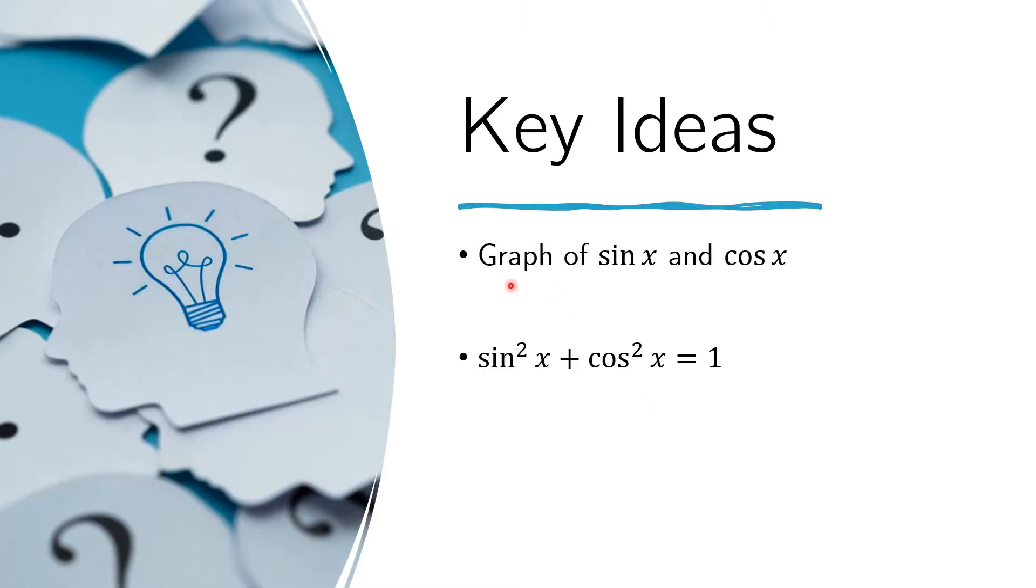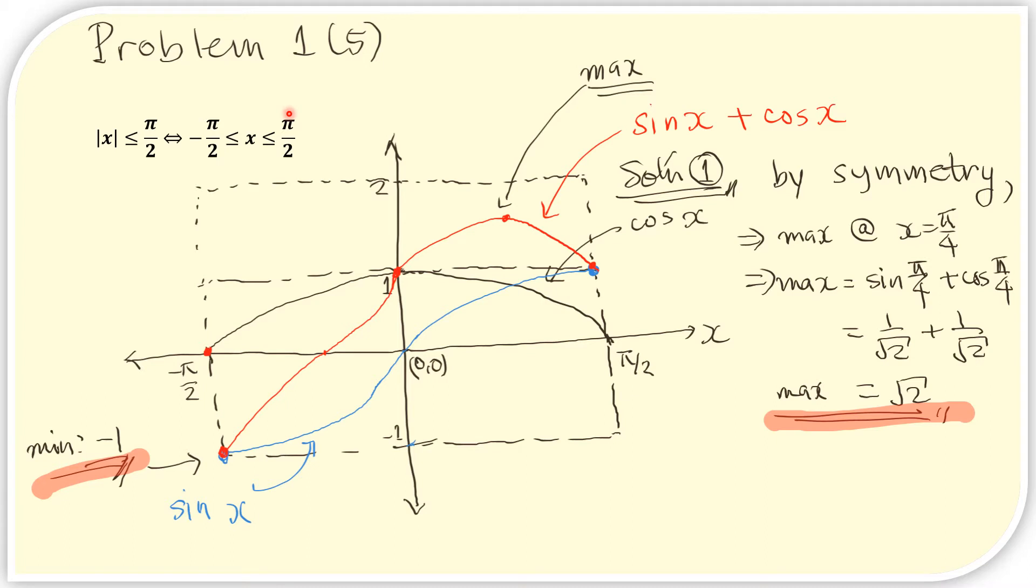We just need to recall the graph of the sine curve and the graph of the cosine curve. It will also be helpful to remember this Pythagorean identity. First, let us plot the trigonometric functions in the interval that is given. This is the given interval.